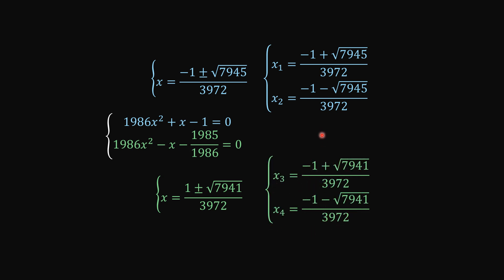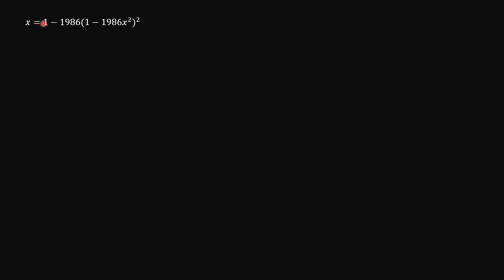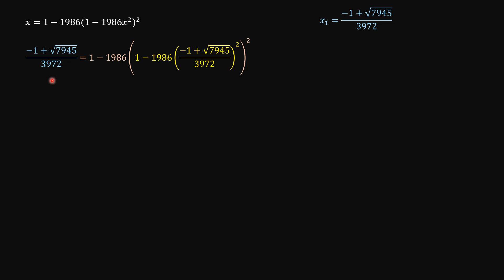Now let's do something crazy — let's check with one of these solutions. You can pick whatever you want, but I'm just going to pick the first one here. So this is our original equation and the first solution is this. We're going to have this one here — so this is x, which is this one, equals one minus this one here, and then times x squared, which is this one squared.